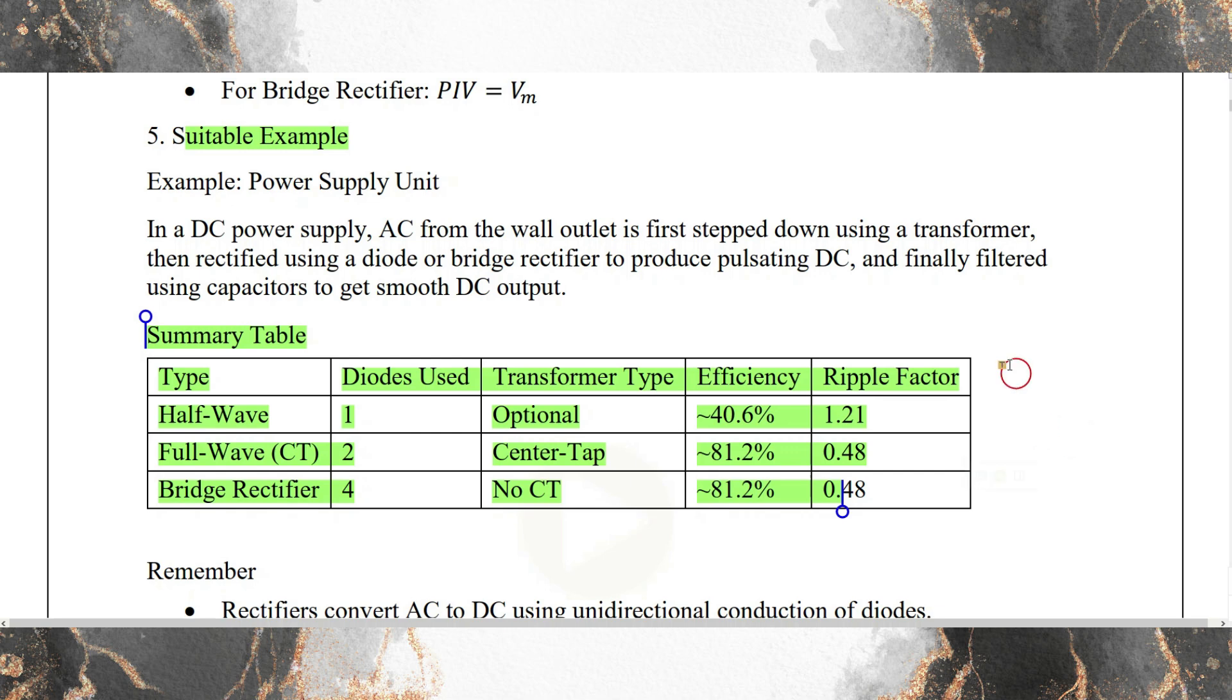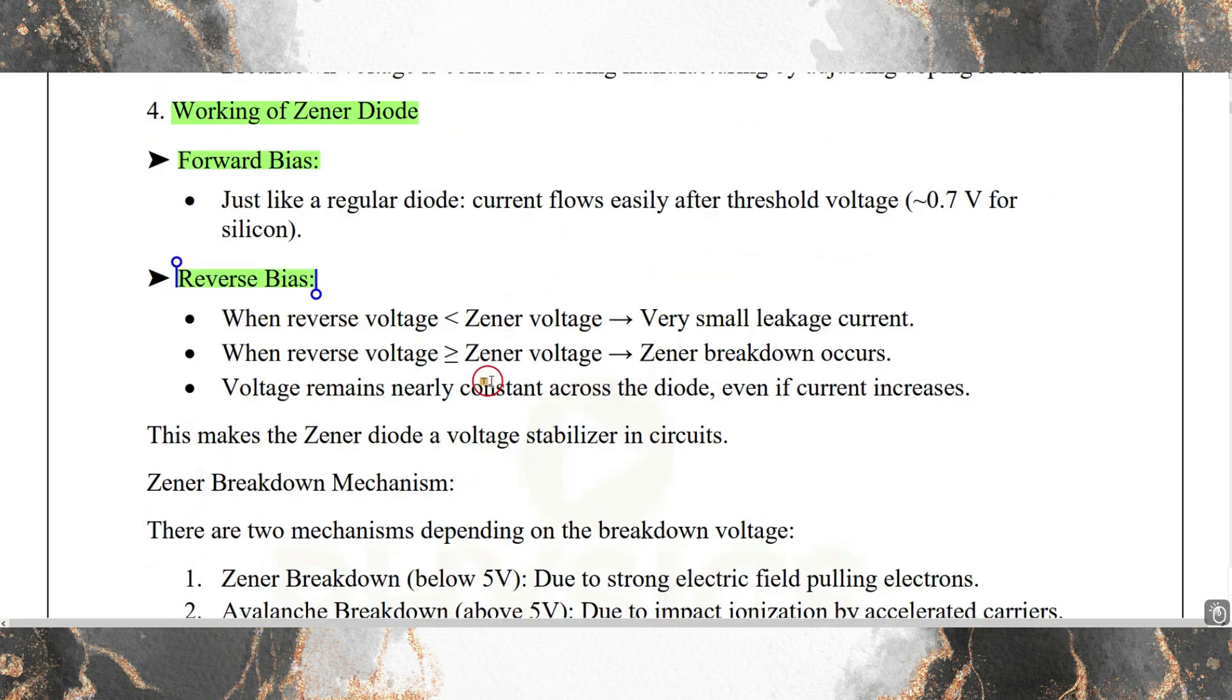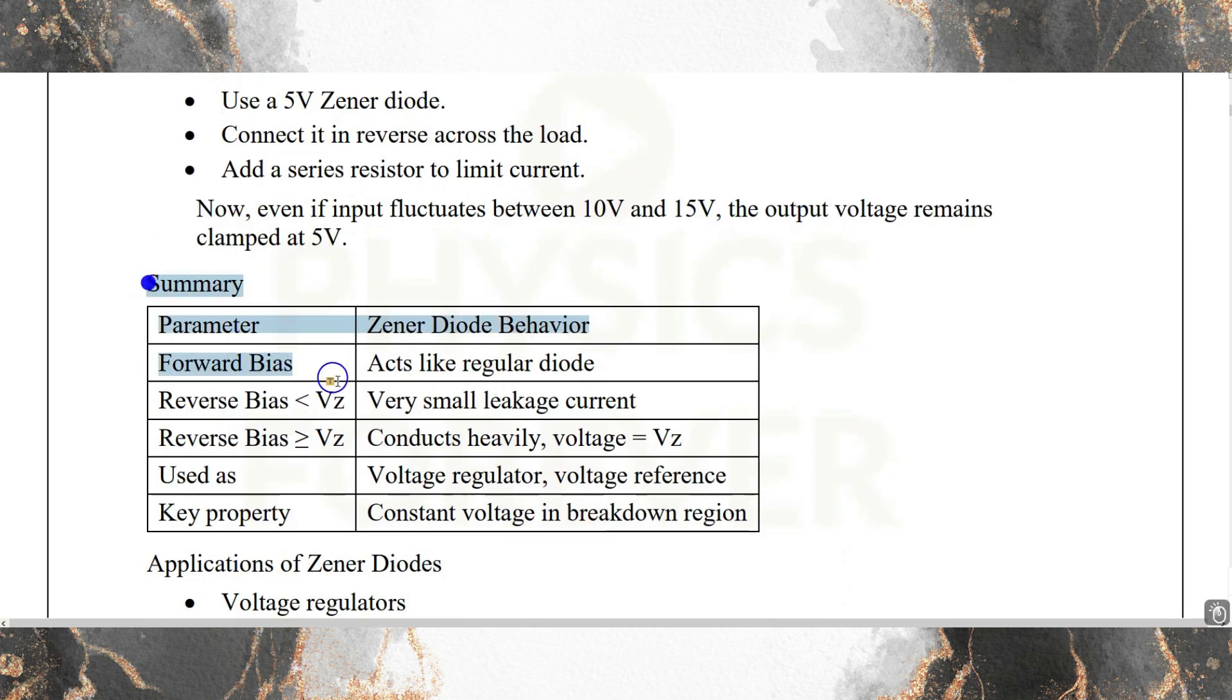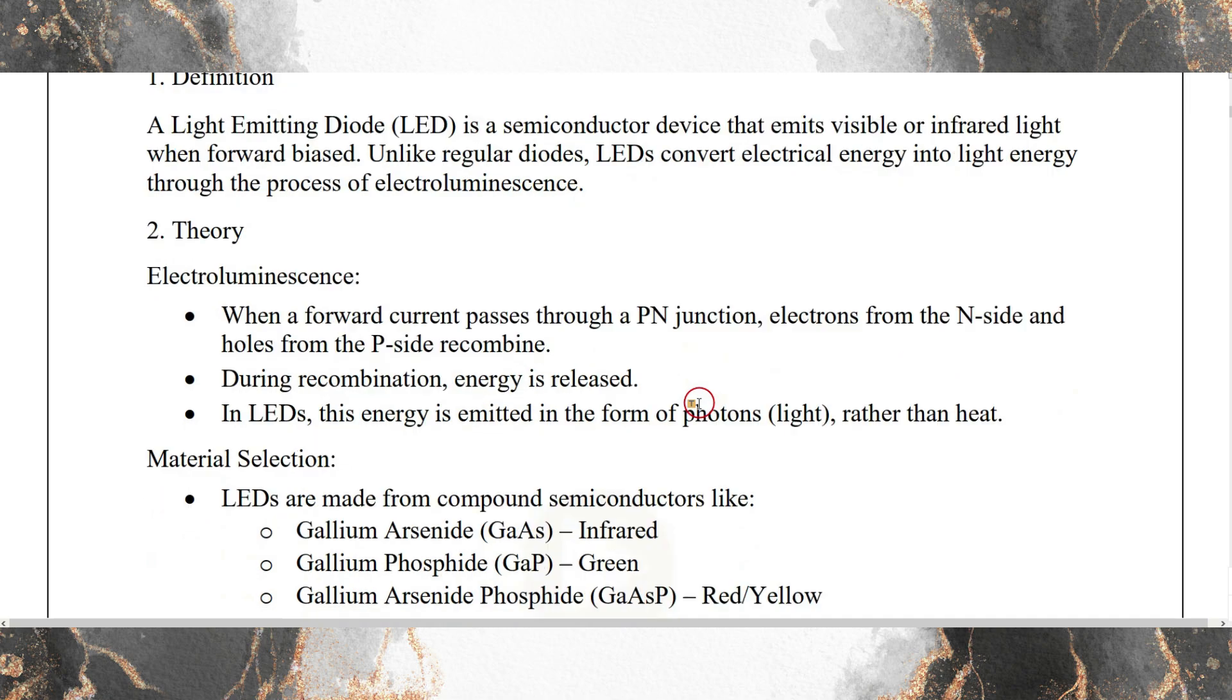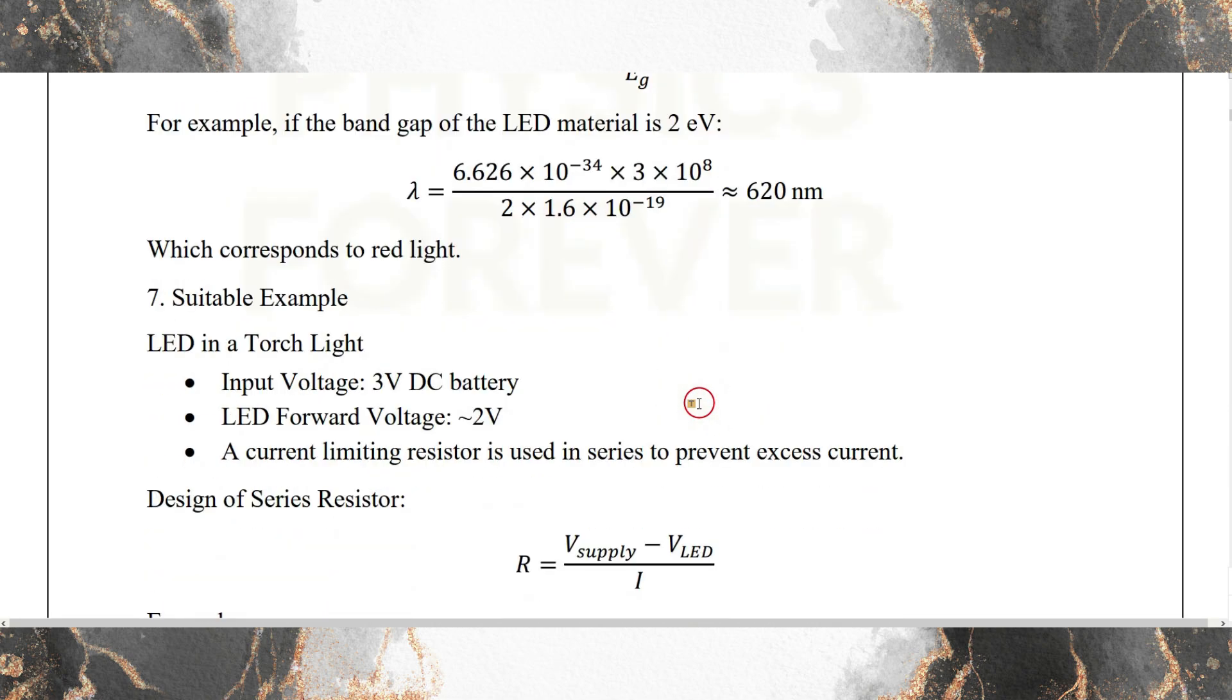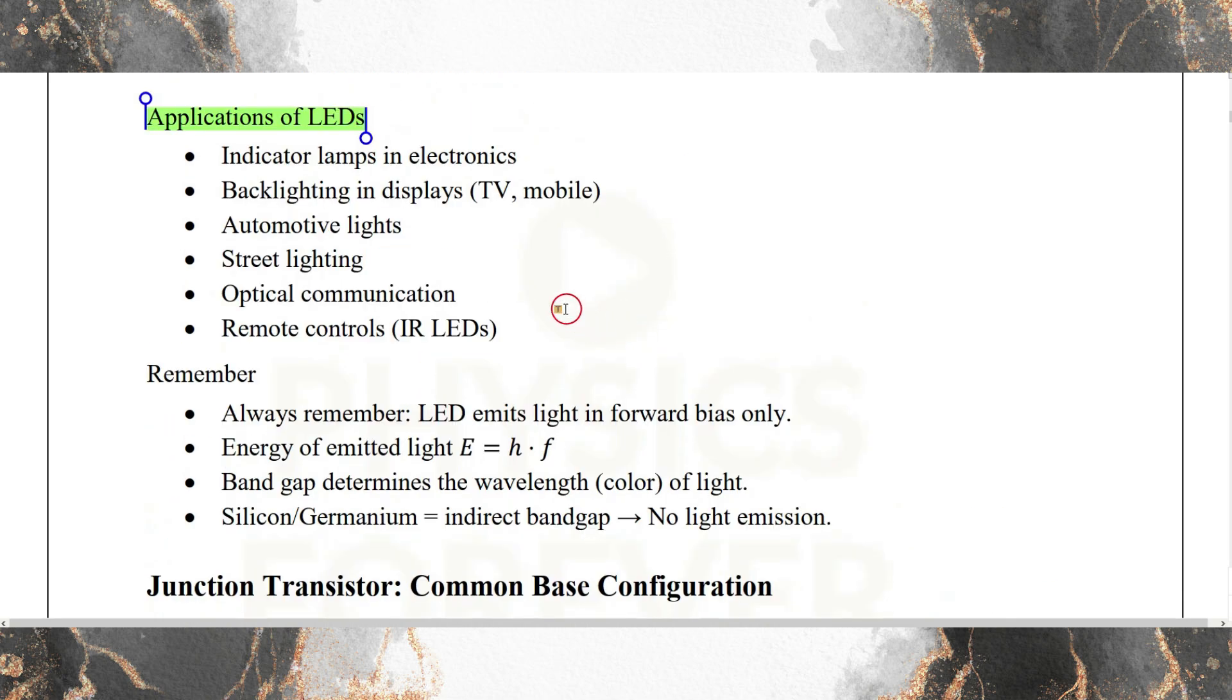Similarly for Zener diode, then working of Zener diode in forward bias and reverse bias. Then we have to give a summary - most important summary with maximum number of applications. Then LED and applications of LED with elaboration.